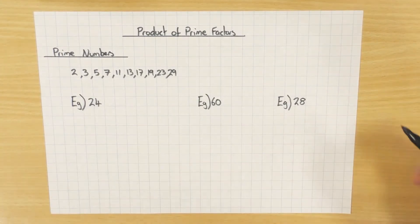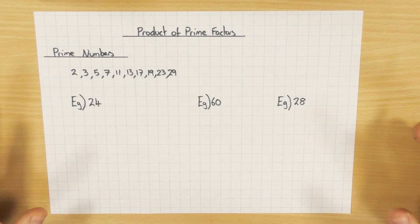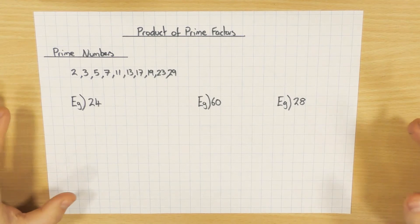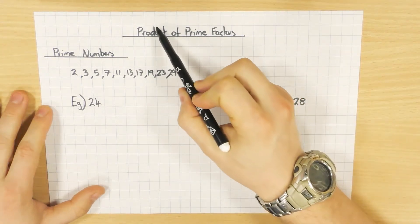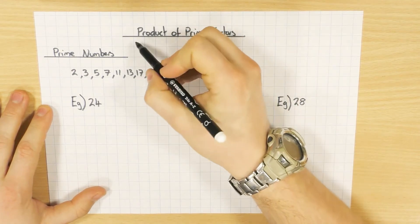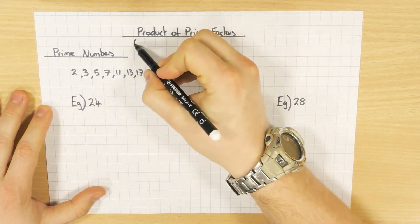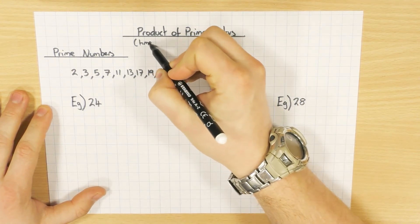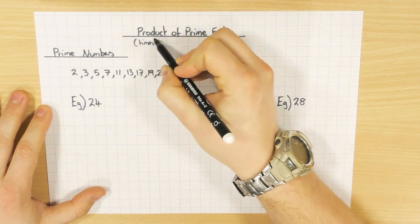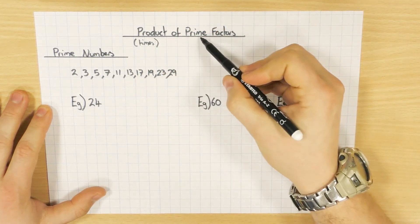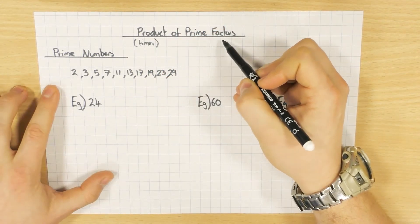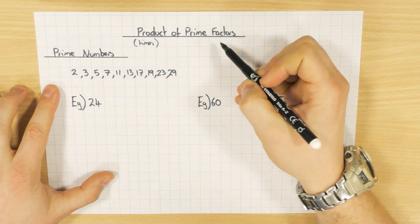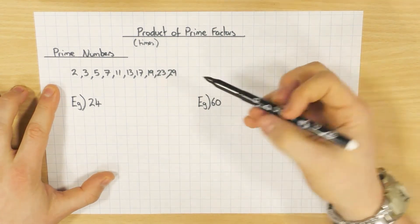On this video I'm going to have a look at how you break numbers down into a product of their prime factors. So what does that actually mean? Well, product is just a way of saying multiply or timesing two numbers together. Prime numbers — everyone should know their prime numbers, I'll talk about that in a minute. And then factors: numbers that go into another number.